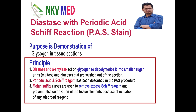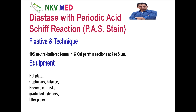Now we understand the principle. First we will use the diastase or amylase, which will break the glycogen into smaller sugars. These smaller sugars will wash out. After that, we will use the PAS. The periodic acid oxidizes the sugars into aldehydes, and these aldehydes bind with the Schiff reagent and give the magenta color. Next, we will use the metabisulphite, which mainly removes the excess Schiff reagent from the tissue section. The fixative techniques and equipment are the same as per the PAS stain.